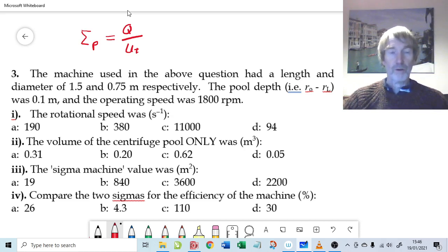None of those terms on this side of the equation have anything to do with the centrifuge really, because that is the throughput and that could be a gravity settling based on throughput or it could be a centrifuge throughput. There's nothing intrinsically centrifugy about Q and there is definitely nothing intrinsically centrifugy about the terminal settling velocity of a particle of a certain size. So we call that sigma process because that's what the process actually gives you.